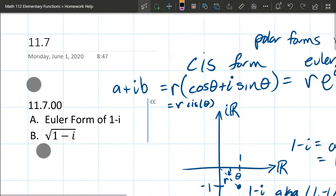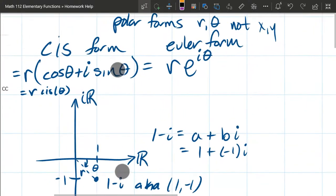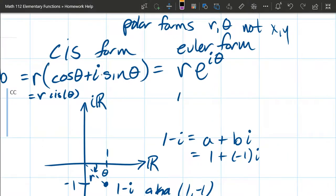All right, so now that you know the forms, that lets us multiply and take powers very easily. So that's what Euler form and CIS form are good for. You can multiply, and you can do any powers, including fractional powers. So that's what Euler form is good for.